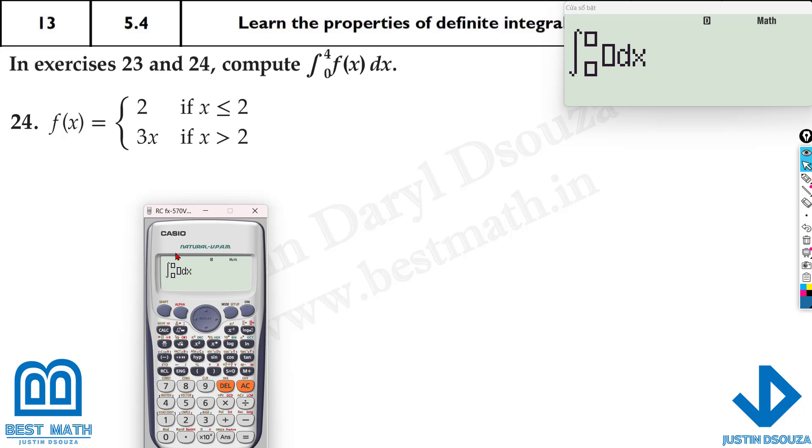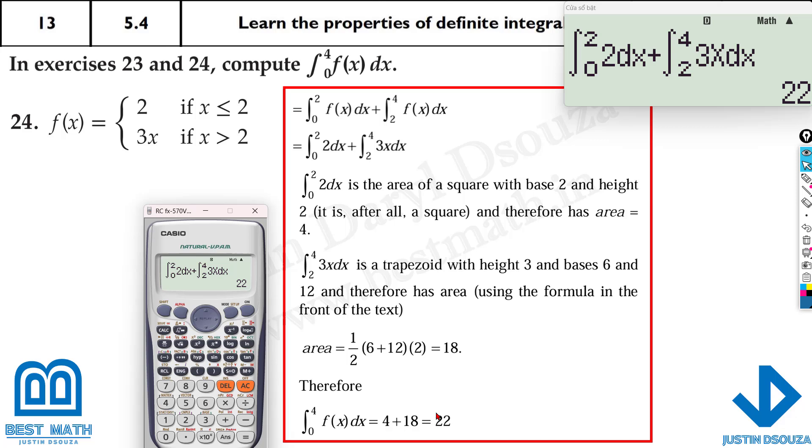For the first one, when x is less than 2, it's just 2, and we write the limit from 0 to 2 because the domain is cut at 2, plus integral of 3x from 2 to 4. And here we go, the answer is 22. That should be the final answer.